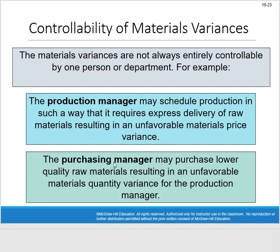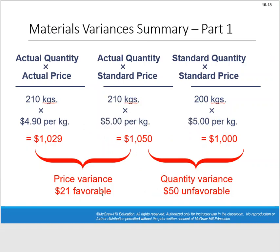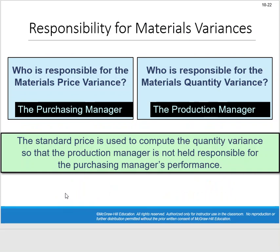Going back to Glacier Peak: we got cheaper material at $4.90 instead of $5, but used more of it. The production manager might say the cheap materials couldn't be worked with, causing excess usage. Standards are set for a reason, but if nobody takes responsibility, it makes problem solving hard. We ultimately need to figure out why 10 extra kilograms were used — was it really because of cheap material? In real life, we'd need to get the true answer.